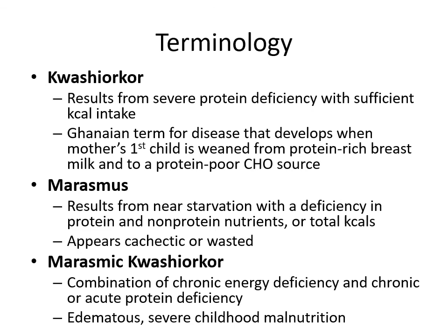Specific types of malnutrition include kwashiorkor — severe protein deficiency with sufficient caloric intake, a Ghanaian term for a disease that develops when a mother's first child is weaned from protein-rich breast milk to a protein-poor carbohydrate source or porridge. Marasmus results from near starvation with deficiency in protein, non-protein nutrients, and total calories, presenting with a cachectic or wasted appearance where ribs and collarbones are visible.